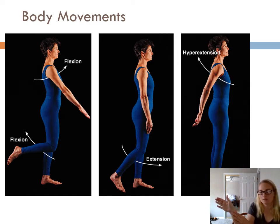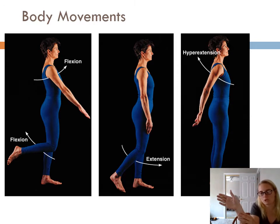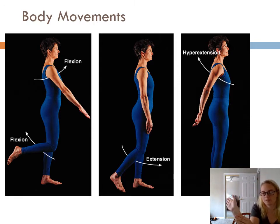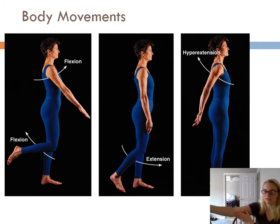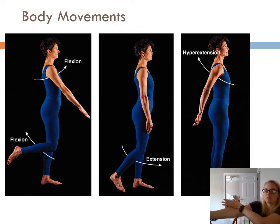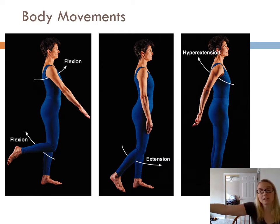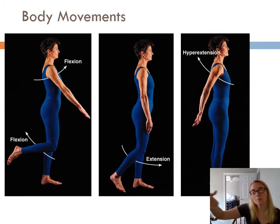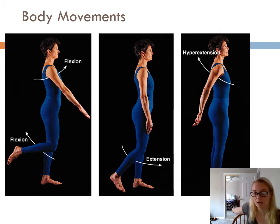On the wrist, in anatomical position: flexion, extension, hyperextension. But your elbow can't do that normally — I'd have to break my elbow to do hyperextension, and that could lead to some injuries. So some body parts you can do flexion, extension, hyperextension, and some body parts you can't.